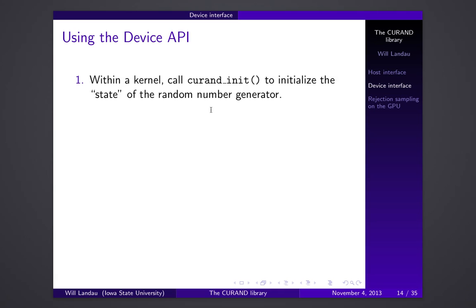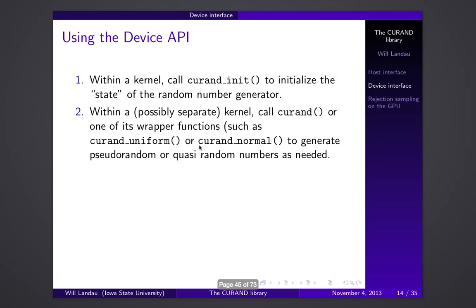If you're running multiple threads in parallel and need to generate random numbers, each separate thread should have its own random number generator. If multiple concurrent threads try to use the same generator, you run into a race condition very fast. So each thread in your procedure should have its own random number generator. You initialize all of them with curandInit and keep track of all the states. When you want the actual draws, you use curand, curandUniform, or curandNormal.